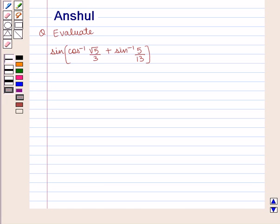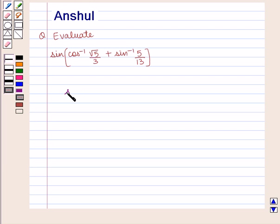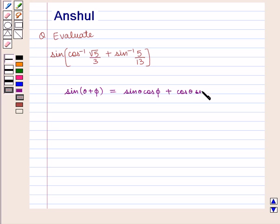Hello and welcome to the session. In this session we are going to discuss the following question: Evaluate sin of cos inverse of square root of 5 by 3 plus sin inverse of 5 by 13. We know that sin(θ + φ) is equal to sin θ cos φ plus cos θ sin φ.